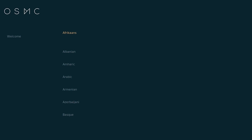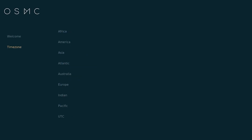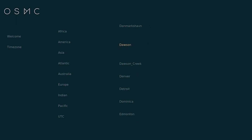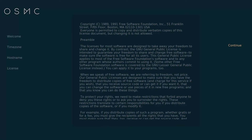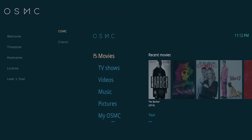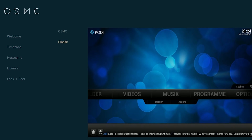So we can see the table to select the language, and then the time zone. The name here you can choose randomly or depending on you. You can select anything you want. Here we have two kinds of themes — you can choose OSMC or classic. With classic, you can see something very familiar with Kodi.